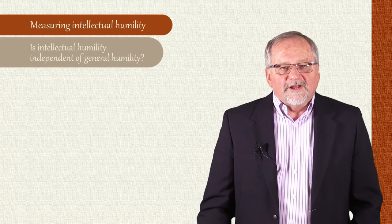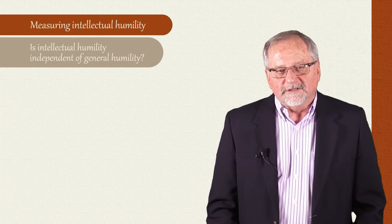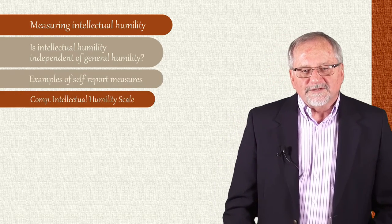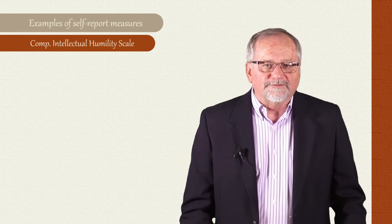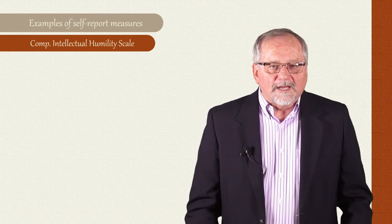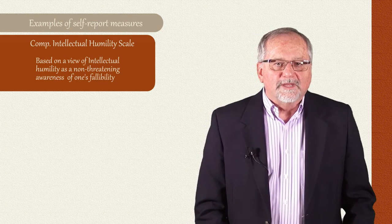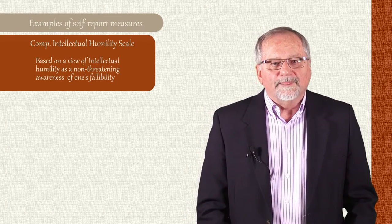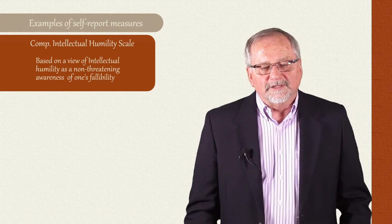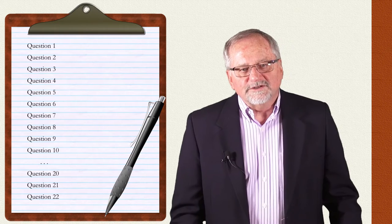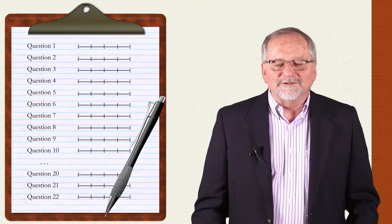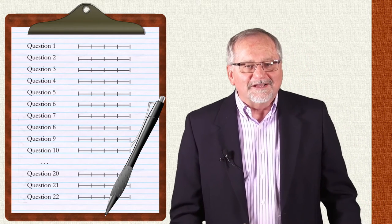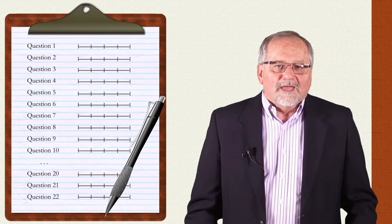Fortunately, there have now been several measures developed to assess specifically intellectual humility. The first of these measures that we will look at is called the Comprehensive Intellectual Humility Scale. This is based on a conception of intellectual humility as a non-threatening awareness of one's intellectual fallibility. The scale consists of 22 items answered on a five-point Likert format, strongly disagree to strongly agree. By now, you might have gathered that's a common scale that is used.